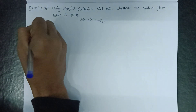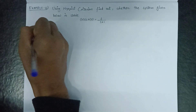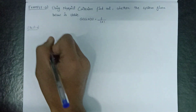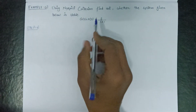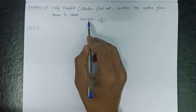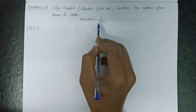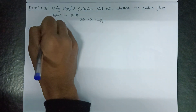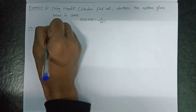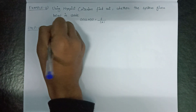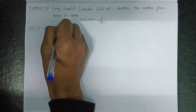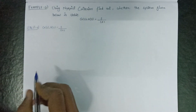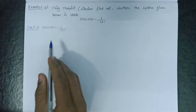Moving on to step number one, that is determination of transfer function. Since the transfer function is given as G·H equals s over s plus one. So G(s)·H(s) is equal to s over s plus one. This is our transfer function.